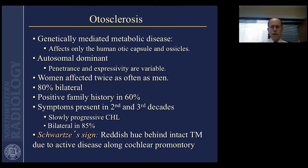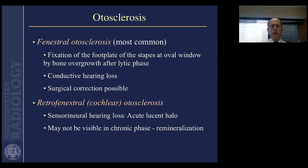Clinicians, if they look through the tympanic membrane, may see a reddish hue behind it due to active demineralization in bone along the cochlear promontory, which is usually where otosclerosis begins. There are two basic types. The one where you typically see a reddish discoloration of bone is called fenestral otosclerosis — from the French 'la fenestra,' meaning window — and it's the most common type.